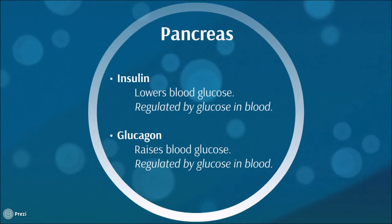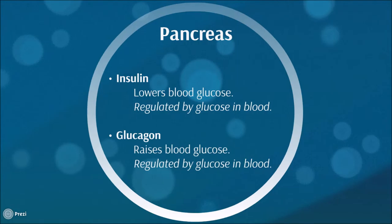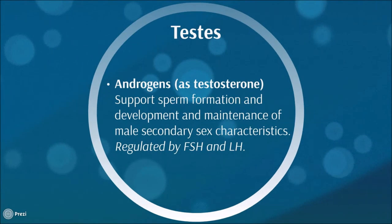The pancreas produces insulin, which is a protein that lowers blood glucose, regulated by glucose levels in blood. It also secretes glucagon, which is a protein with the antagonist effect of insulin as it raises blood glucose, also regulated by glucose levels in blood. The testes are in charge of secreting androgens, which are steroids that support sperm formation and are responsible for the development and maintenance of male secondary sex characteristics, regulated by FSH and LH.